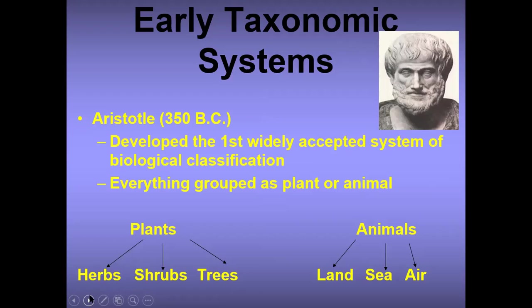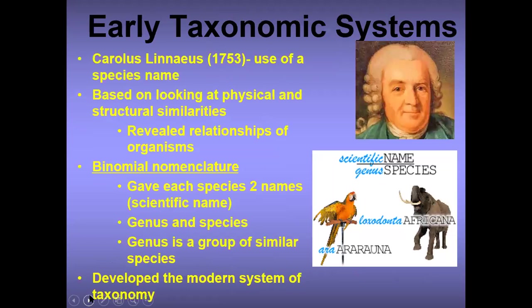So land was under that animal group — kind of weird, right? Eventually somebody came on the scene and said that's probably not working out, let's do something better. So we had somebody by the name of Carlos Linnaeus who, in 1753, used a species name to classify organisms based on physical and structural similarities, which revealed the relationships of organisms.